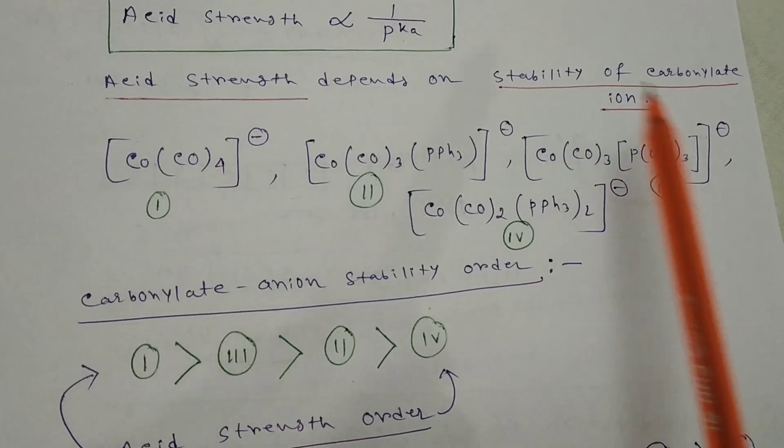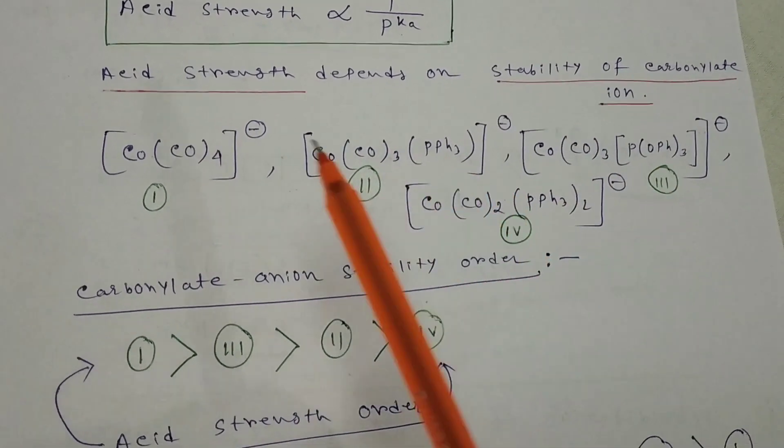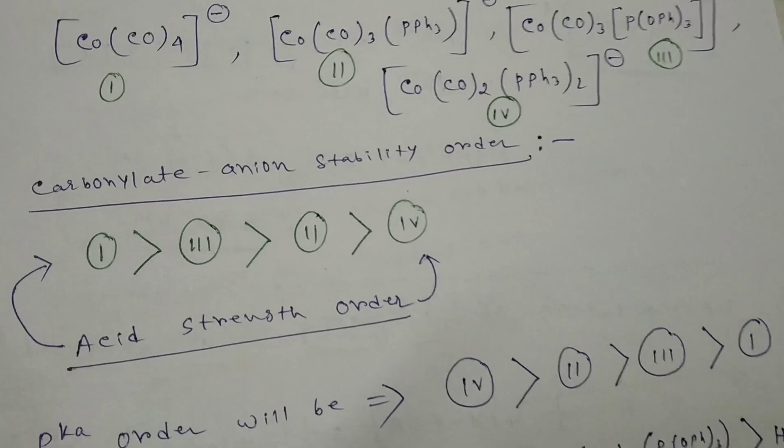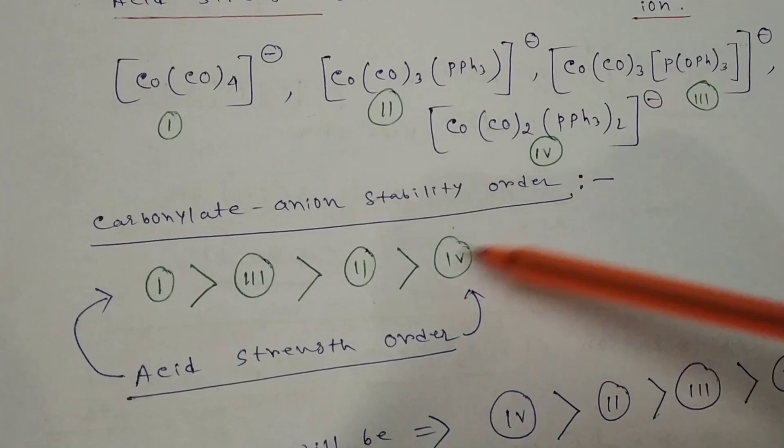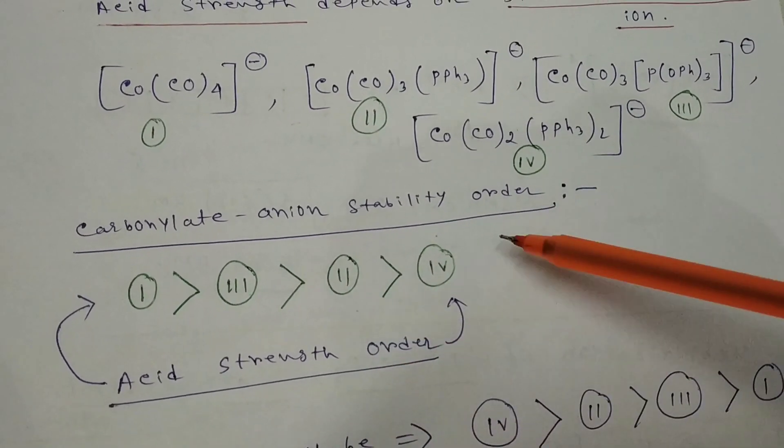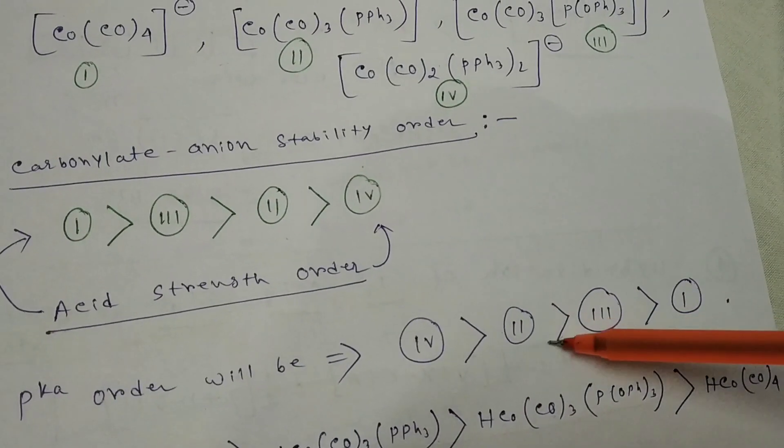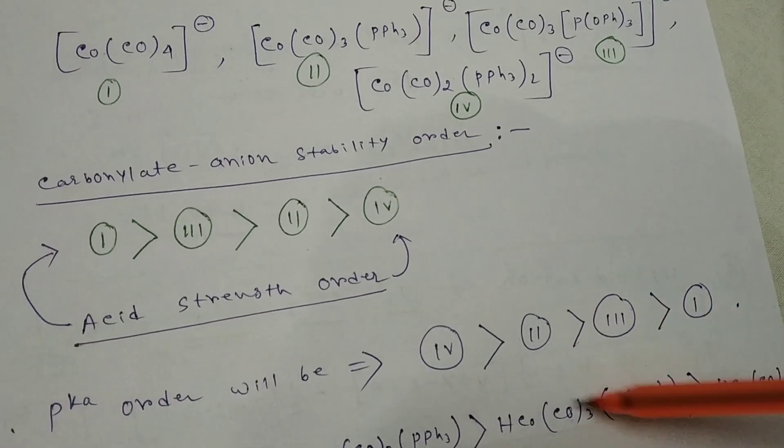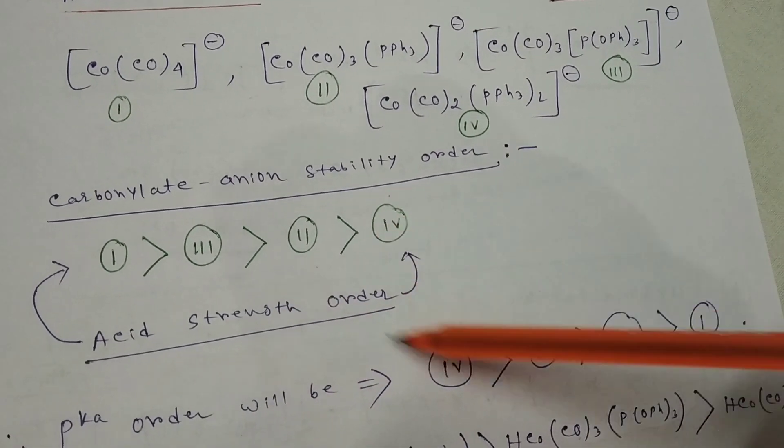These are the carbonylate anion stability order. So acid strength will be first, then this one, then this one, then this one. But in the question they ask for pKa value, so the order will be reverse of the acid order. First will be four with more pKa value, then two, then three, then one. This will be the order, reverse of the acid strength order.